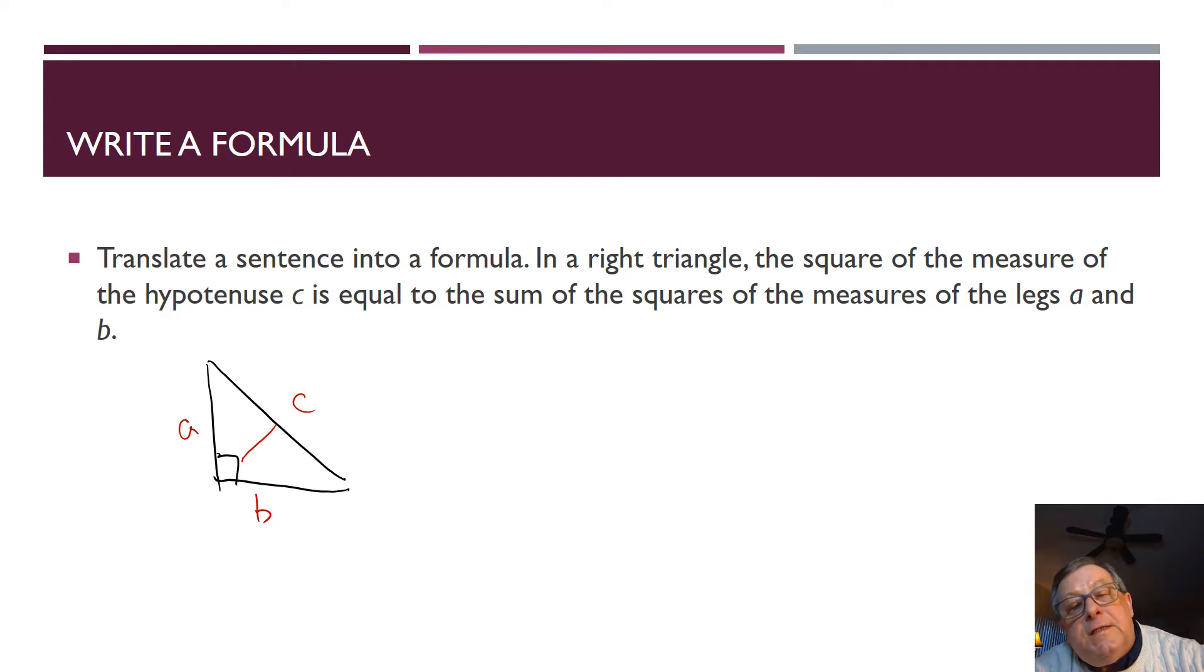Now, if we were to write this into a formula, we could write this as A squared plus B squared. There's our two legs, and they're squared. The square of the measures of legs A and B equals C squared, which is C being the hypotenuse.